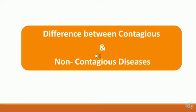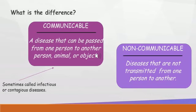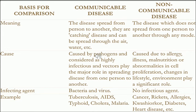That was all about non-contagious diseases. Now I would like to summarize the topic by comparing both diseases. Contagious diseases are also known as communicable diseases, and non-contagious diseases are also known as non-communicable diseases. The big difference is that communicable diseases can spread from one person to another, while non-communicable diseases are not transmitted from one person to another. You can see the difference between contagious and non-contagious diseases.